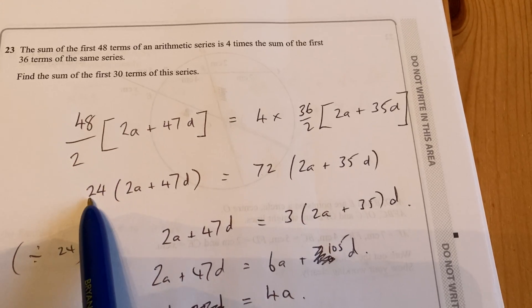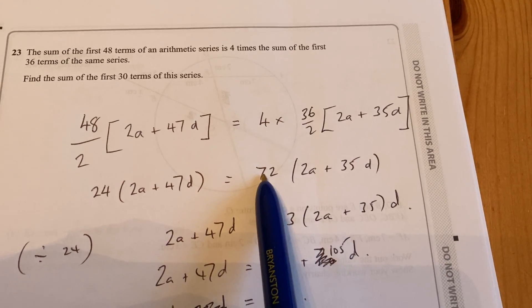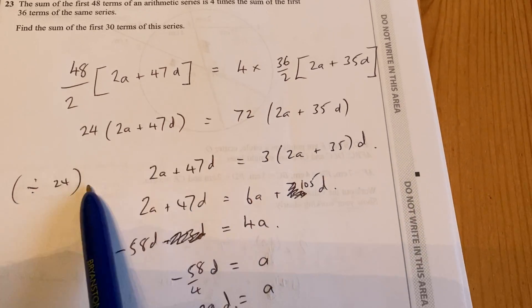We need 4 lots of it equaling the other formula. Cancel down the 48 over 2 is 24. Cancel this down here at the beginning, it's 72. Now 24 goes into 72 three times, so you can divide by 24.